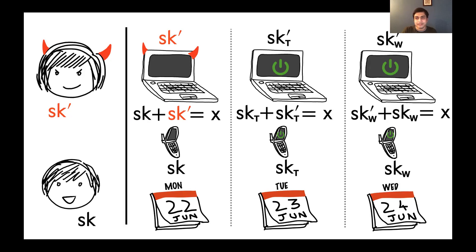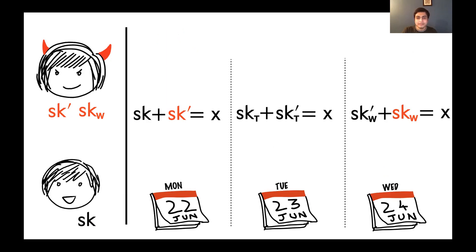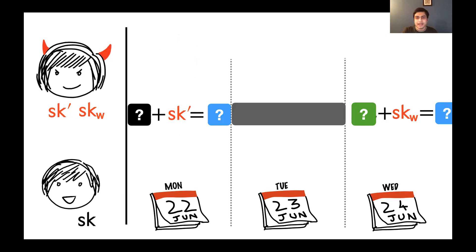That is, he replaces them with sk_t and sk_t prime so that they both add up to the same secret x. And on Wednesday, he does the same thing. So that now, on Wednesday, when his phone gets hacked, the attacker now gets sk_w, which is a share that only makes sense on Wednesday and can't be combined with sk prime. To see why this is the case, let's block out the things that the attacker doesn't know. And we can now see that the attacker has two equations and three unknowns, and so the signing key stays hidden.